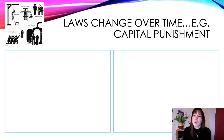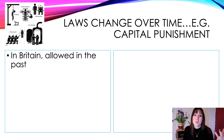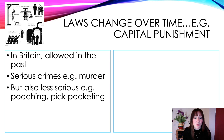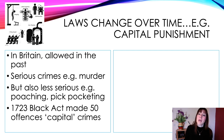Laws change over time. For example, capital punishment — these are laws that have changed over a time period. In Britain, it was allowed in the past for serious crimes such as murder, but also less serious crimes such as poaching, pickpocketing, and stealing. In 1723, the Black Act made 50 offences capital crimes, so 50 different things you could do could end up in you being hanged or executed in some way.